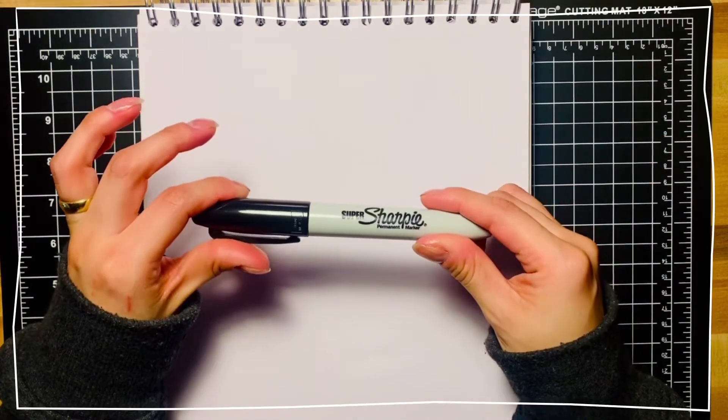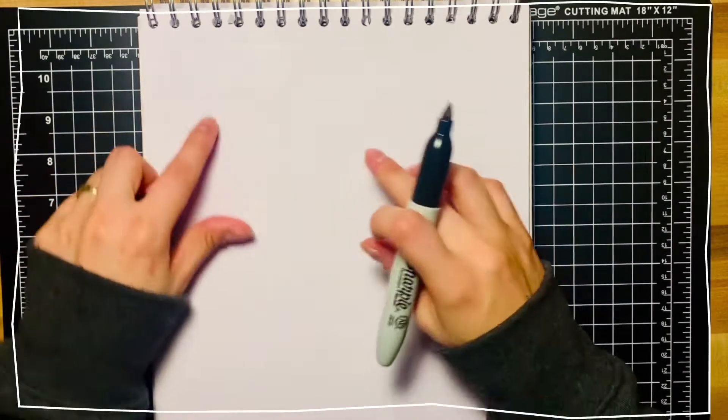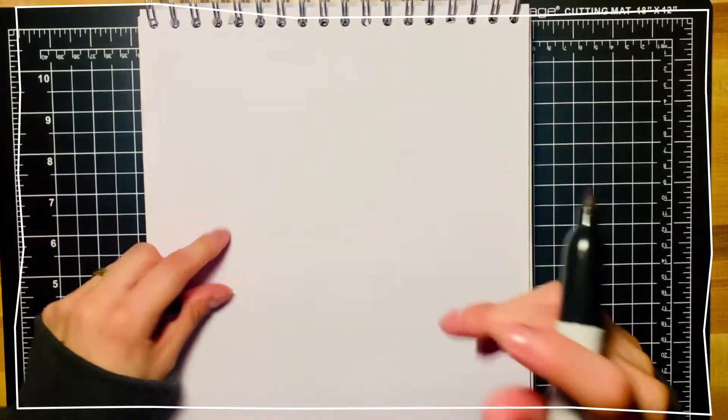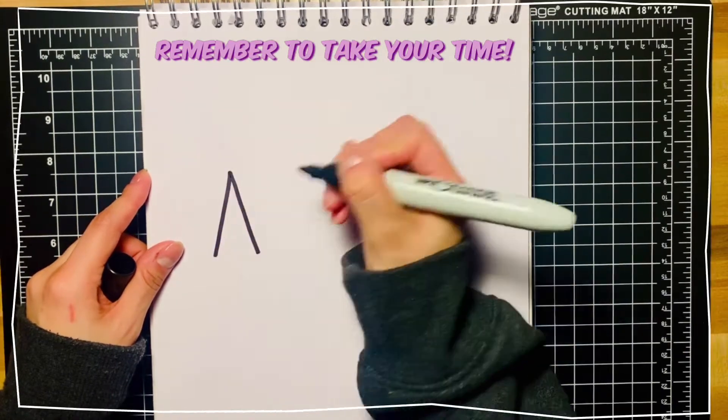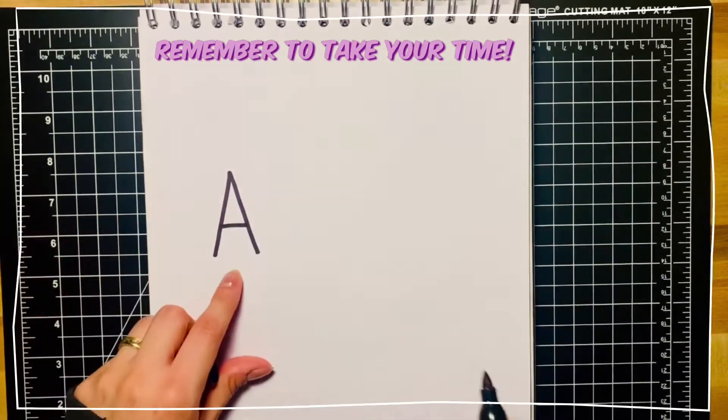Let's get started with our sharpie. So first you're going to want to draw an A. There we go.